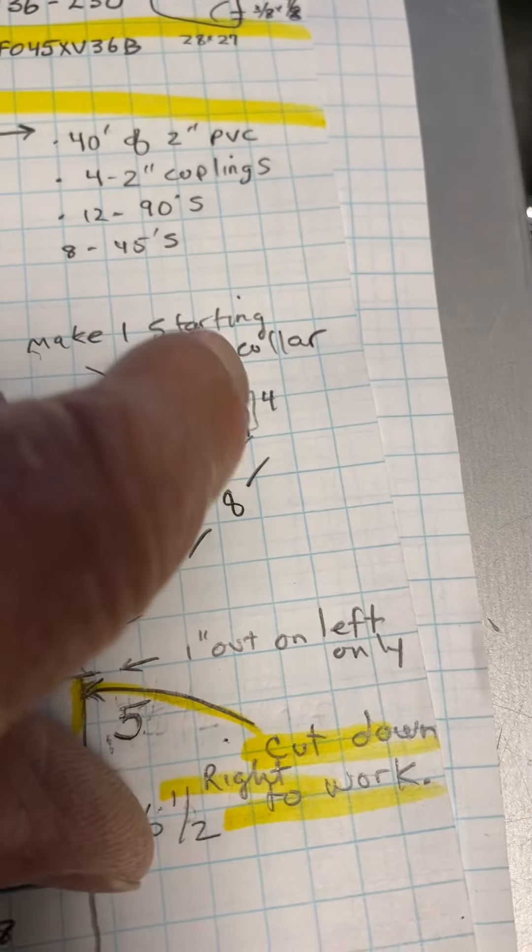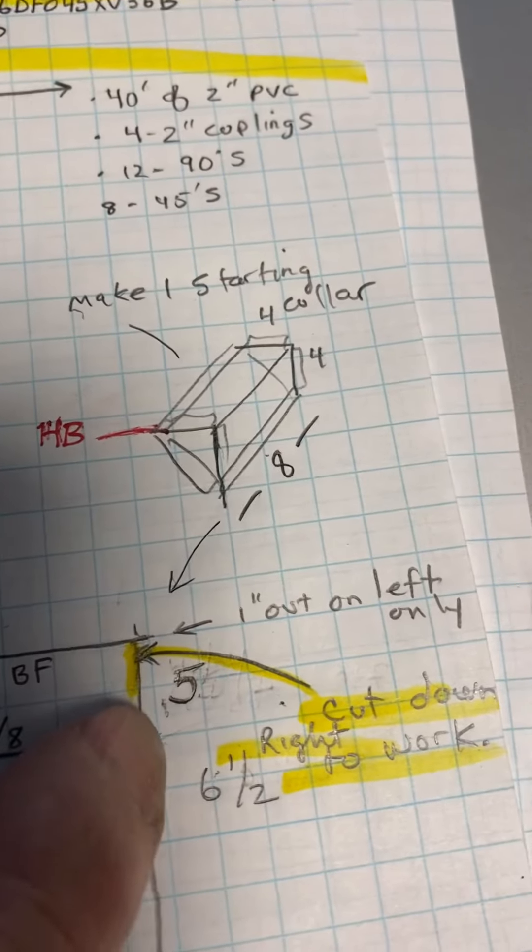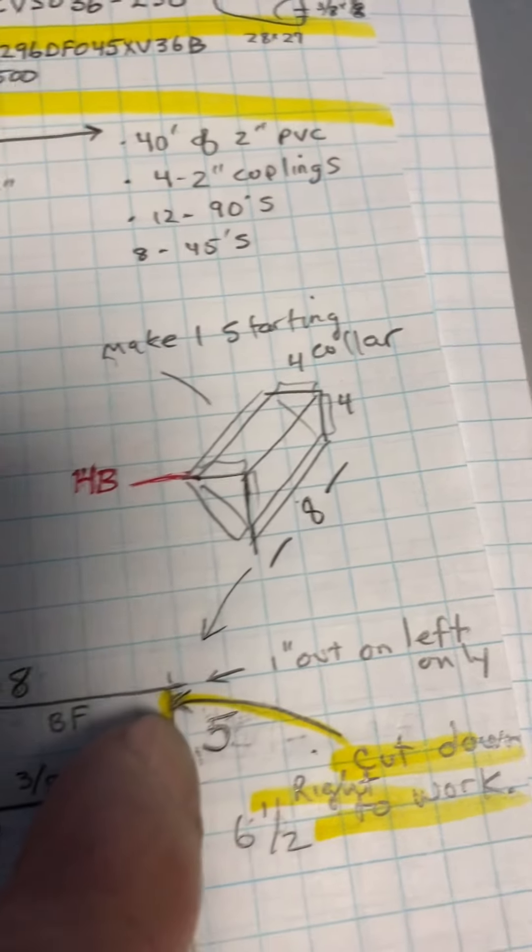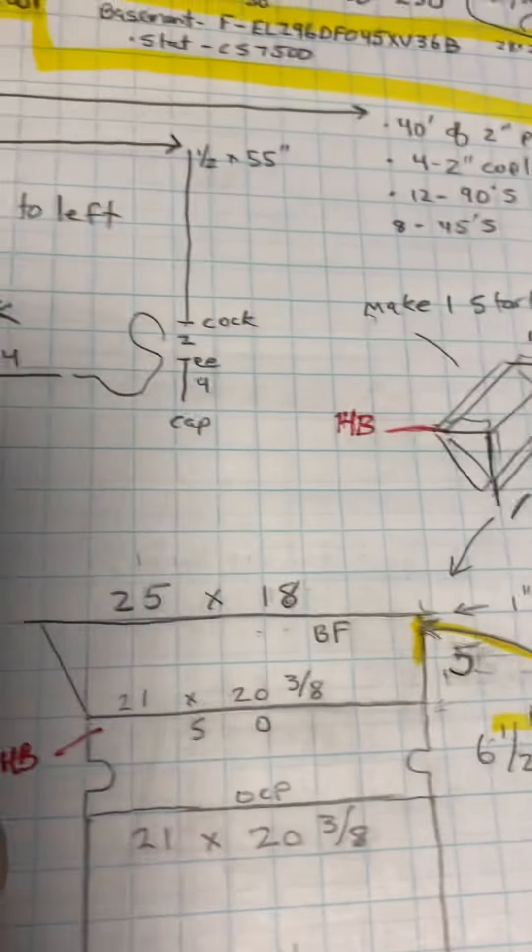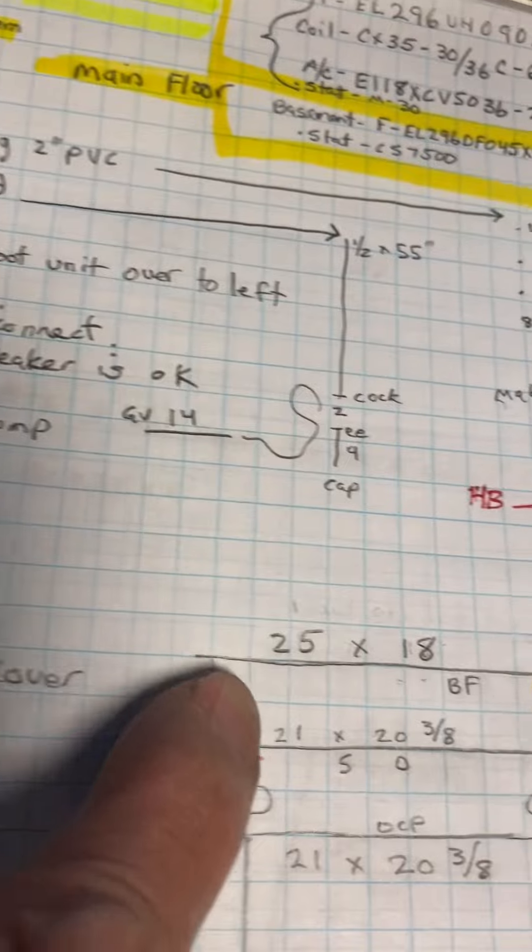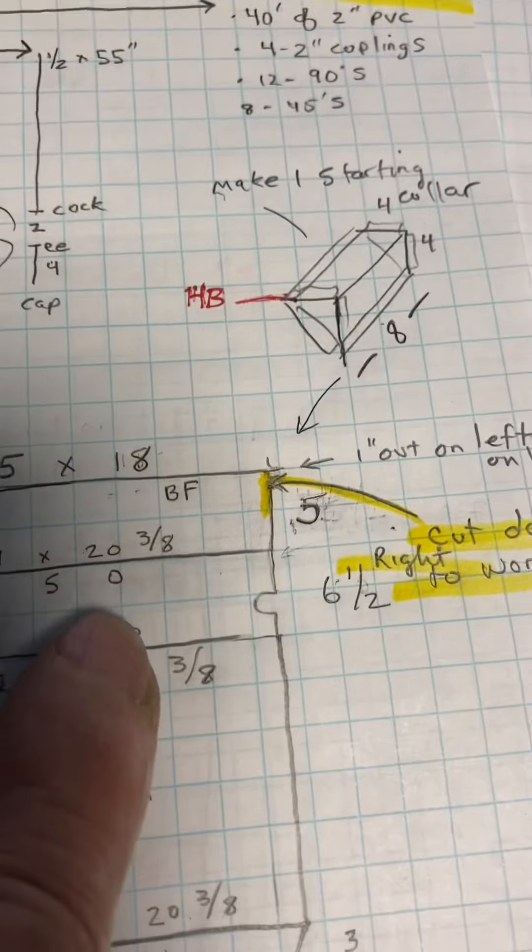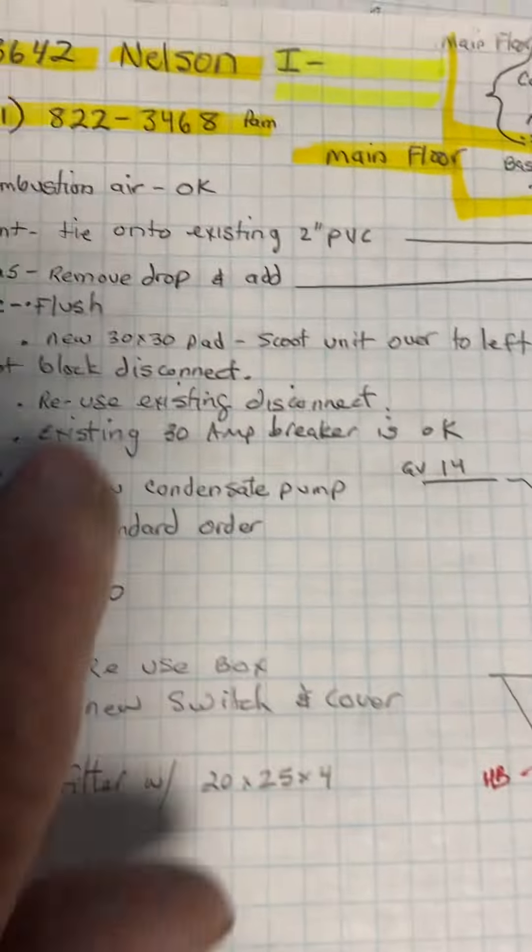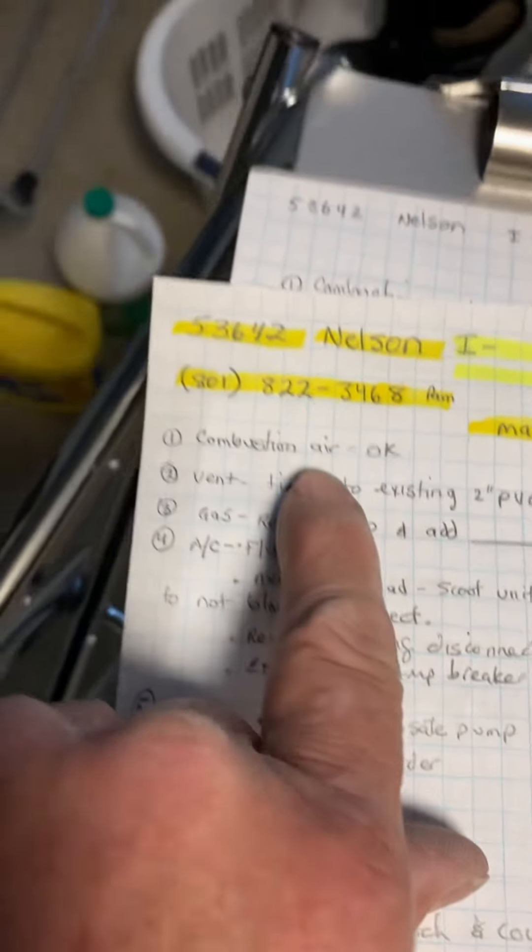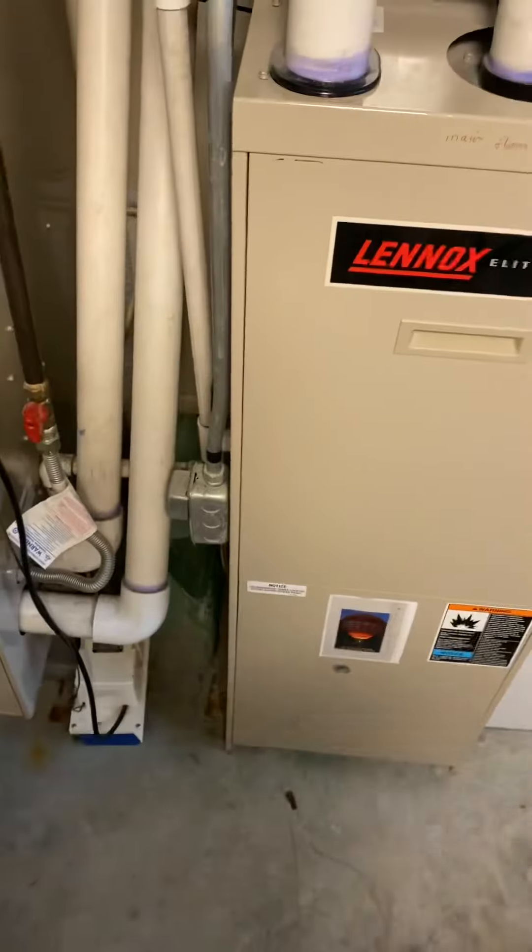Then you just have a little four by four starting collar on this one. Combustion air is okay. They're both high efficient grill door.